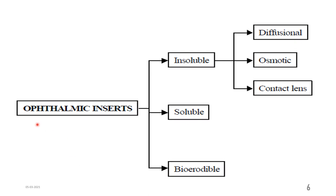Ophthalmic inserts are formulations designed to be installed into the eye, retained for prolonged periods, and release drug slowly. They are classified into three types: insoluble ophthalmic inserts, soluble ophthalmic inserts, and bioerodible ophthalmic inserts. Insoluble inserts are further divided into diffusional systems, osmotic systems, and contact lens-type systems. In total, we will study five types: diffusional, osmotic, contact lens, soluble, and bioerodible ophthalmic inserts.